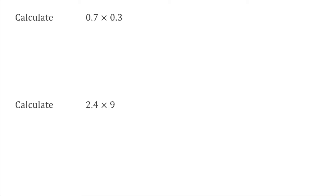For this first example we've got 0.7 multiplied by 0.3. The first thing we're going to do is count how many decimal places are in each number. We've got one decimal place in 0.7 and one decimal place in 0.3. So we add these together: 1 add 1 gives me 2, which means my final answer is going to have two decimal places.